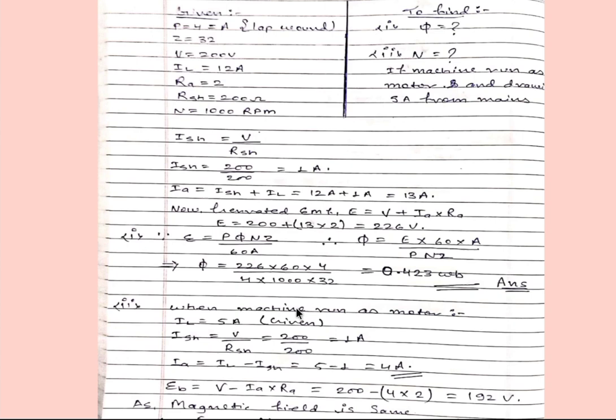Now the second part of the question when machine runs as motor and it is drawing current of 5 ampere. So IL will be 5 ampere and ISH will be same 1 ampere because everything is same here. But armature current will be IL minus ISH because now machine is running as motor, so armature current will be 5 minus 1, it will be 4 ampere.